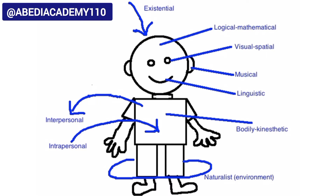Existential intelligence means that a person is able to recognize the issues about human existence — for example, a philosopher. Logical-mathematical intelligence requires reasoning and logic. Visual-spatial intelligence requires our eyesight because it deals with pictures. Musical intelligence requires our ears. Linguistic intelligence requires our mouth — it relates to the number of words a person is able to speak.